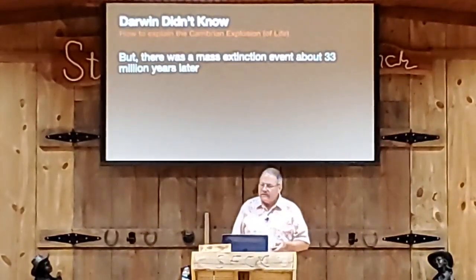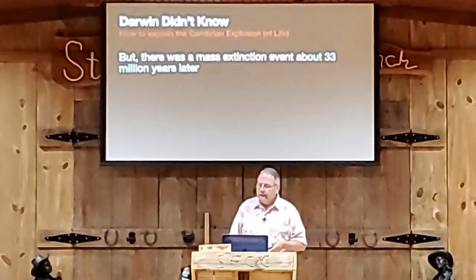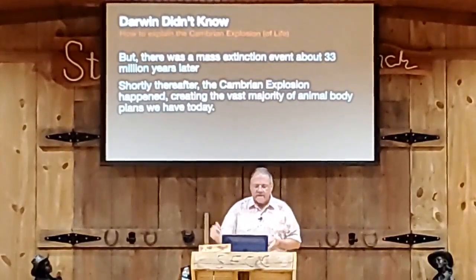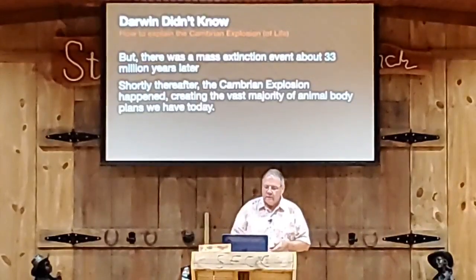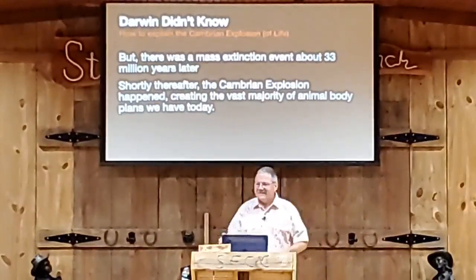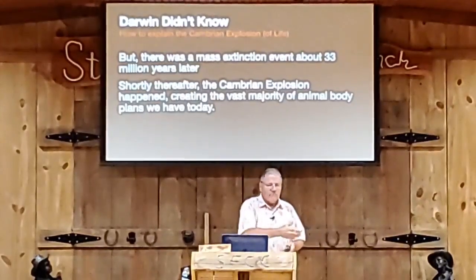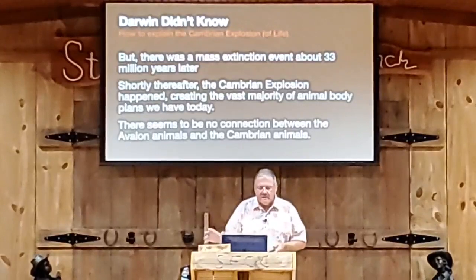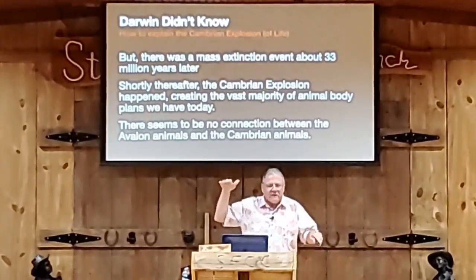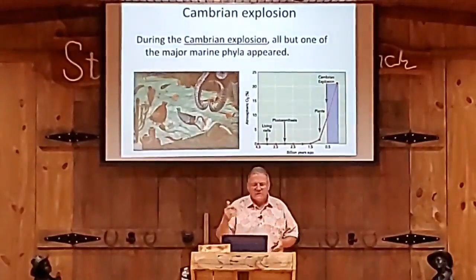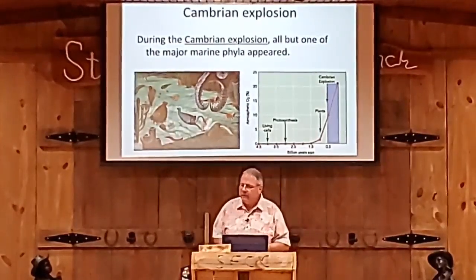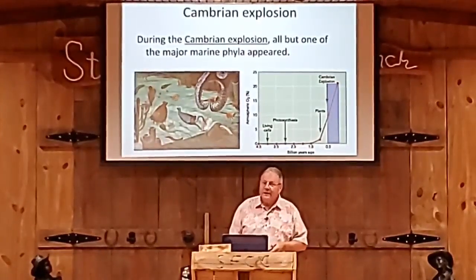Interestingly, there was a mass extinction event about 33 million years later and a lot of them died off. But very shortly thereafter, the Cambrian Explosion of Life happened, creating the vast majority of the animal body plans we have today — horses, cats, dogs, crickets. Each one has a body plan different from others. There seems to be no connection between the Avalon animals and the Cambrian animals. During the Cambrian Explosion, all but one of the major marine phyla appeared on the planet. That's a pretty big explosion of life.